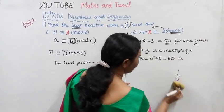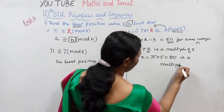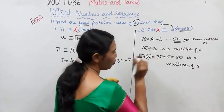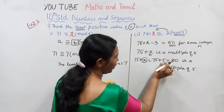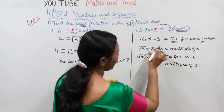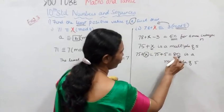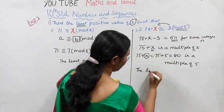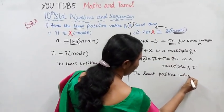Multiple of 5. First 1, 2, 3, 4, 5, the first 3, 4, 5. The 5 in the value, the least value of 5. 75 plus 5 equal to 80 is a multiple of 5. The least positive value of x is 5.